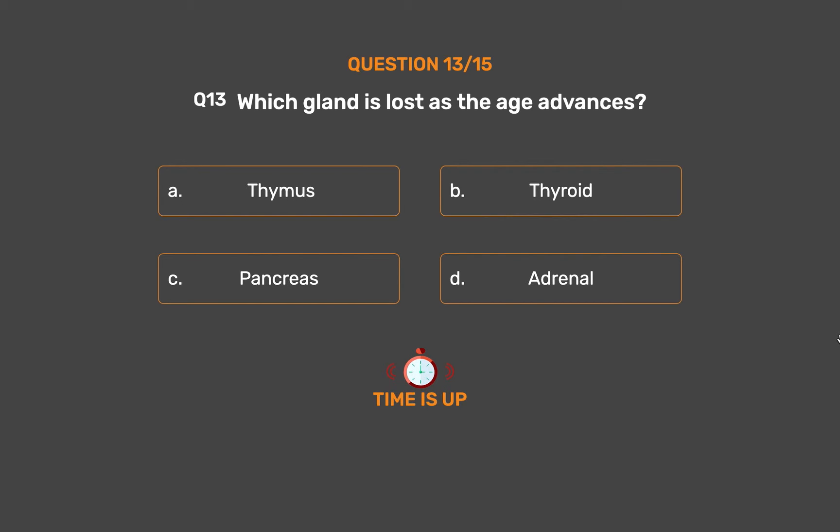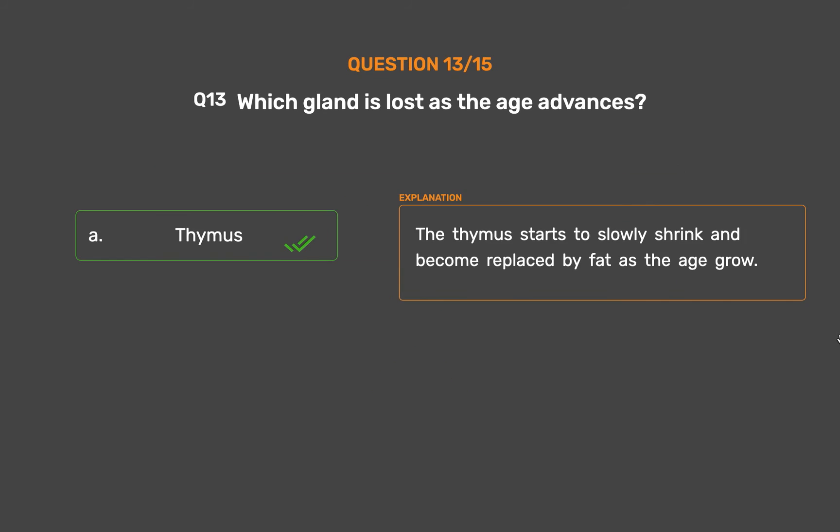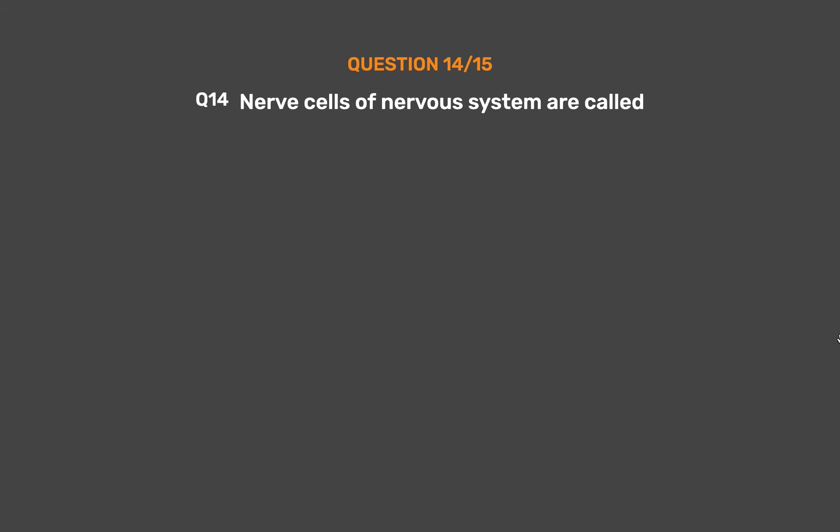The correct answer is Option A, Thymus. The thymus starts to slowly shrink and becomes replaced by fat as age increases.